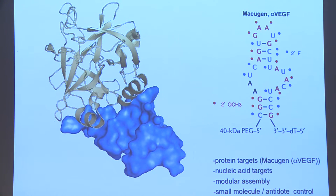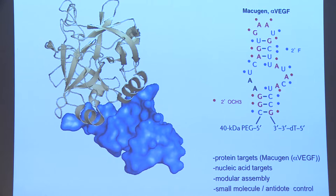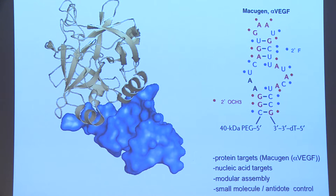Aptamers haven't really made good progress into the clinic, because when they're discovered as DNA and RNA aptamers they need to be extensively modified — like with macugen — to survive within the body. So if we could start with HNA, which is undegradable, we might have an interesting starting point and wouldn't need to go through all of this medicinal chemistry.